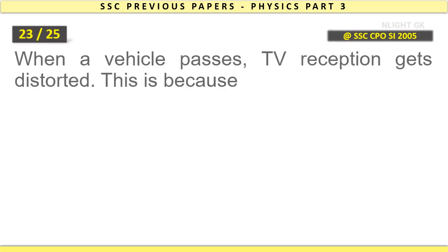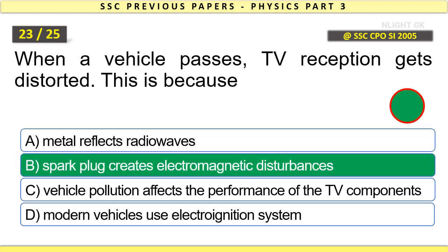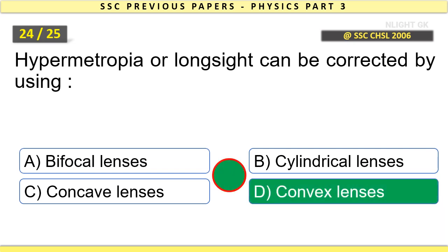When a vehicle passes, TV reception gets distorted. This is because spark plug creates electromagnetic disturbances. Hypermetropia or long sight can be corrected by using convex lenses.